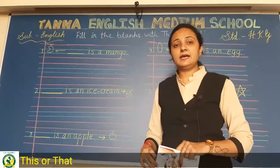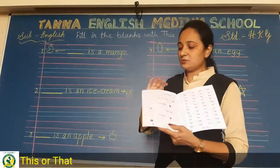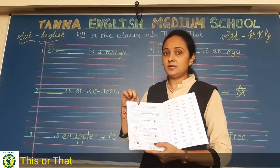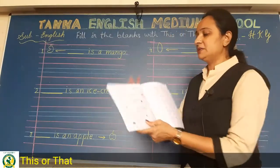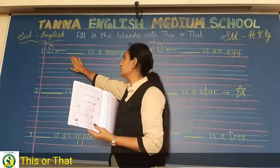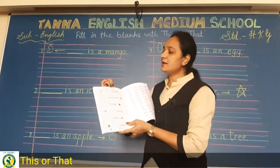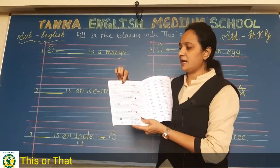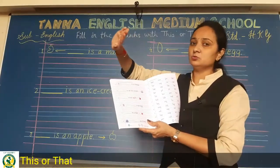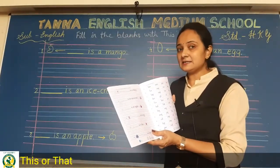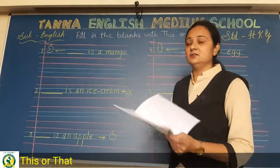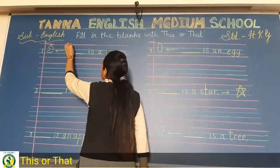Let us start. The first picture is of a mango. The blank says: dash is a mango. The arrow shown for mango is a long arrow, which means it is far. So we will write 'that' — not 'this', but 'that' — because the arrow is big, meaning it is far away.